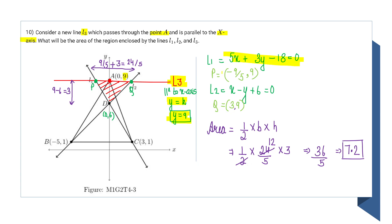Put y = 9 in L1, you'll get the x-coordinate. Put y = 9 in L2, you'll get the x-coordinate. So P will be (-9/5, 9) and Q will be (3, 9).